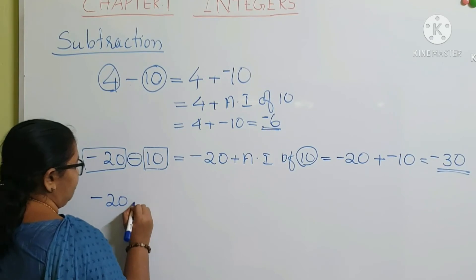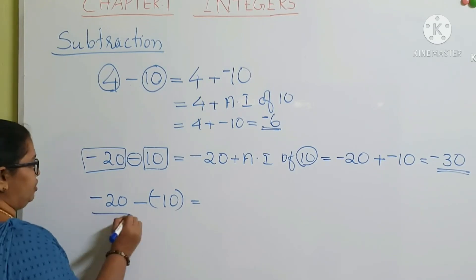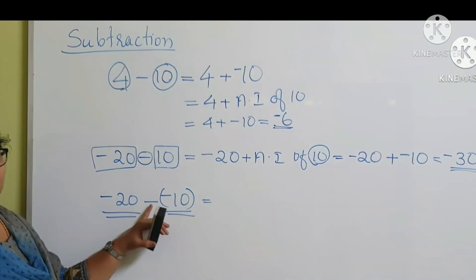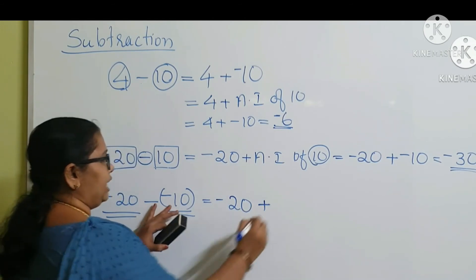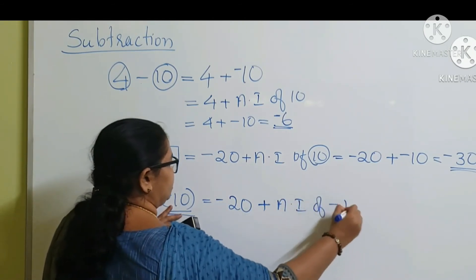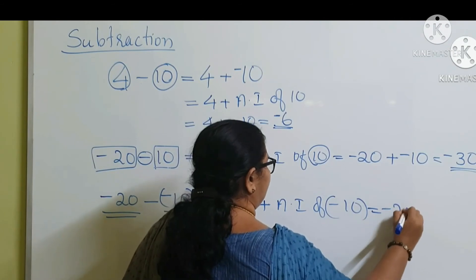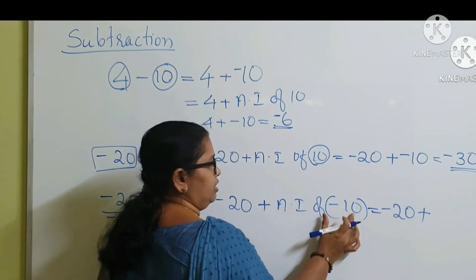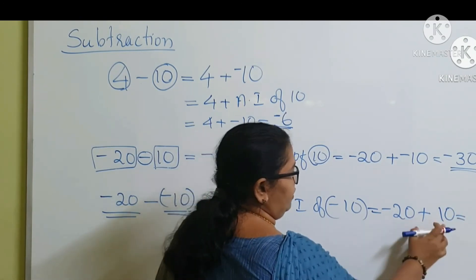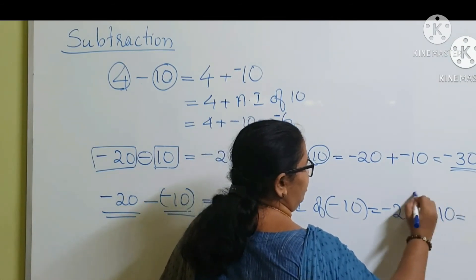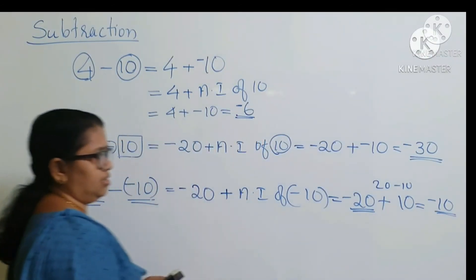Next example: negative 20 minus negative 10. The numbers are negative 20 and negative 10. We change the subtraction to addition and take the additive inverse of minus 10, which is positive 10. So this becomes negative 20 plus positive 10. We subtract them: 20 minus 10 is 10, and the sign of the bigger integer is negative. So the answer is minus 10.